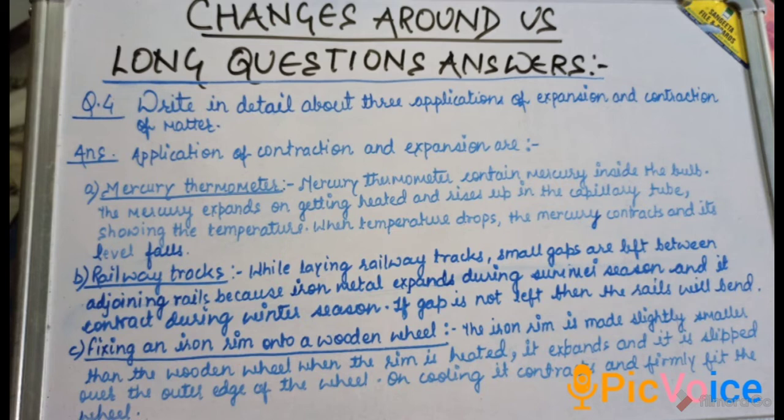Next is railway tracks. While laying railway tracks, small gaps are left between the adjoining rails because iron metal expands during summer season and contracts during winter season. If gap is not left, then rails will bend.